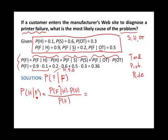So this first one is going to be 0.9 × 0.1 divided by 0.36, which is 0.09 over 0.36 — that's one quarter. So there's a probability of one quarter that it's a hardware problem given we had a failure.